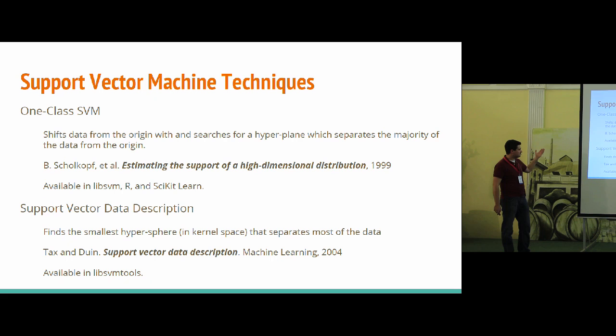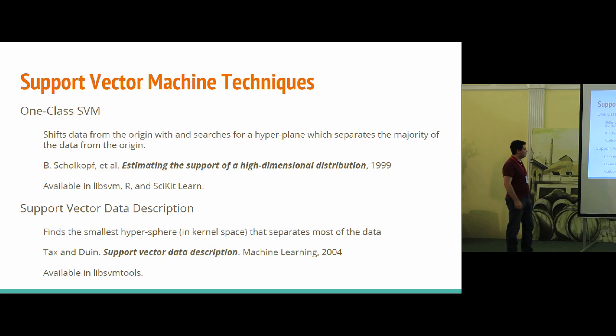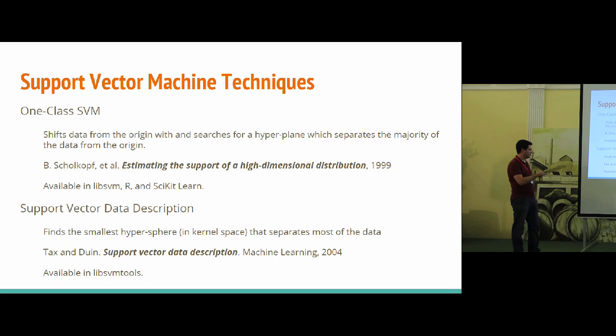One of the oldest and most well-used is the one-class SVM. It uses a support vector machine but projects the data away from the origin and looks for a hyperplane to get that data as far away from the origin as possible. It's been used for quite a while, and is available in LibSVM, R, and scikit-learn. There's a somewhat more recent flavor that uses the hypersphere instead, which actually works better in practice and is available in LibSVM tools.